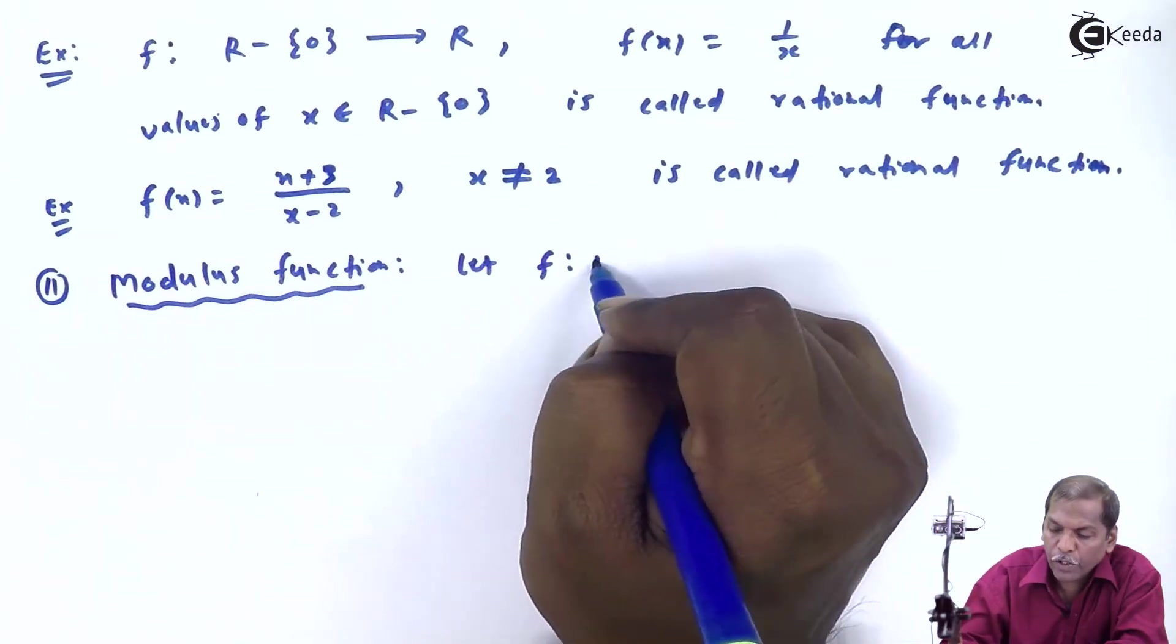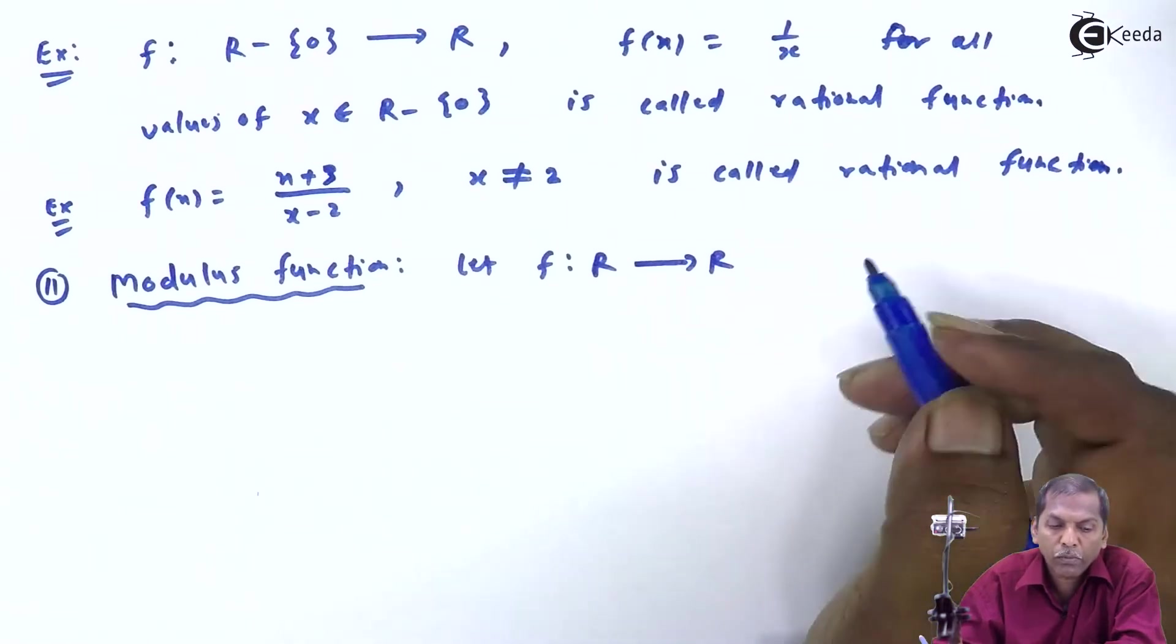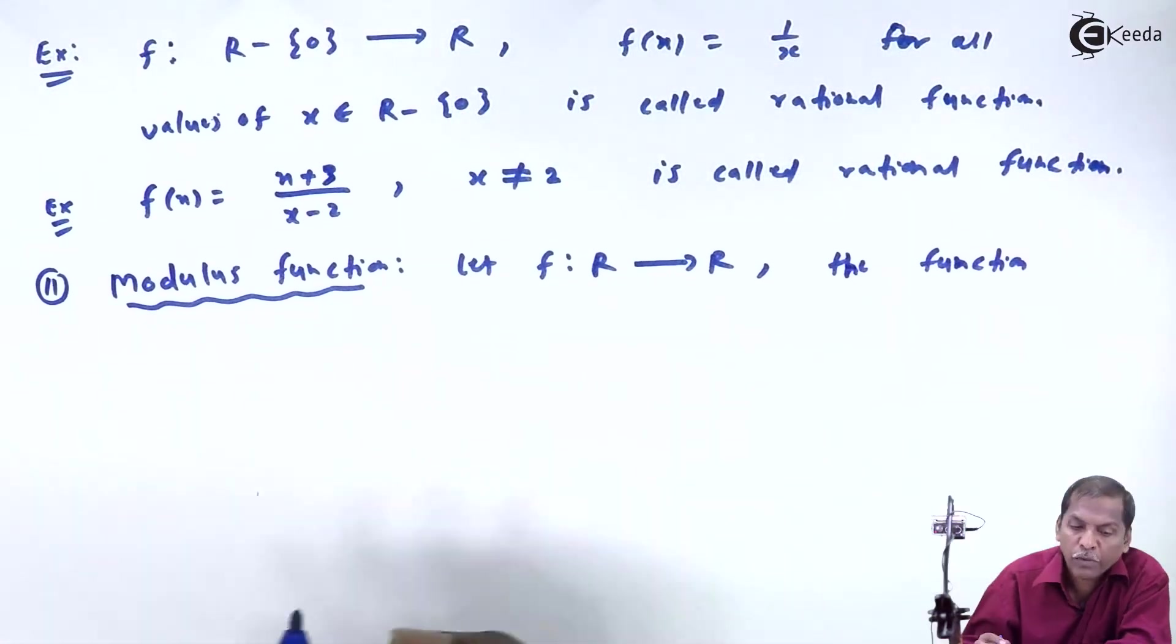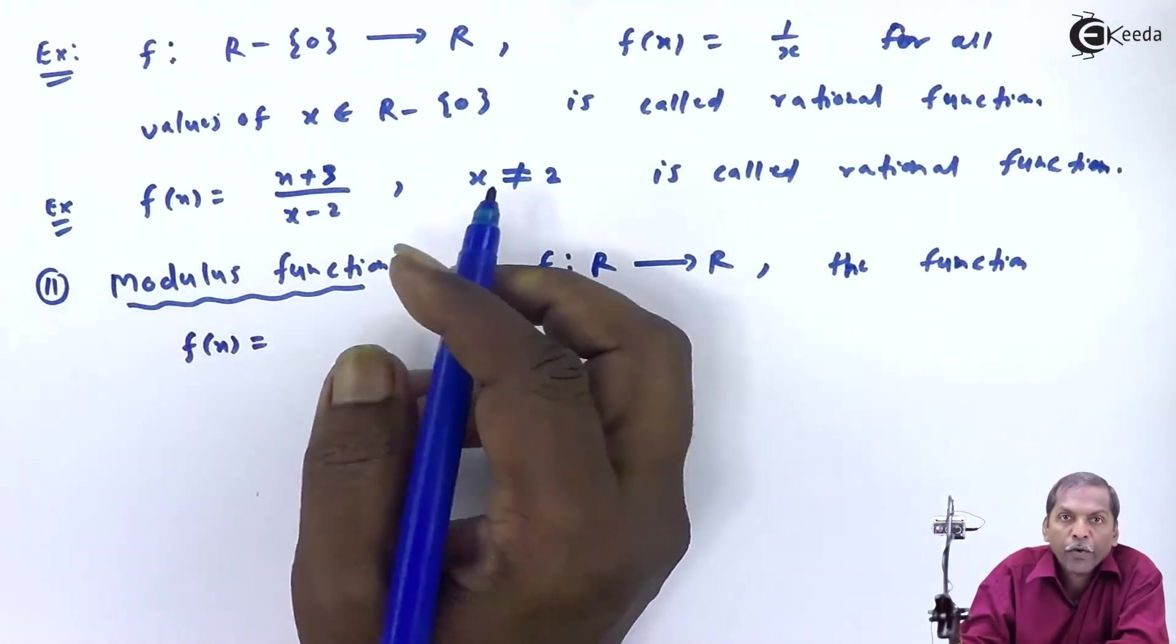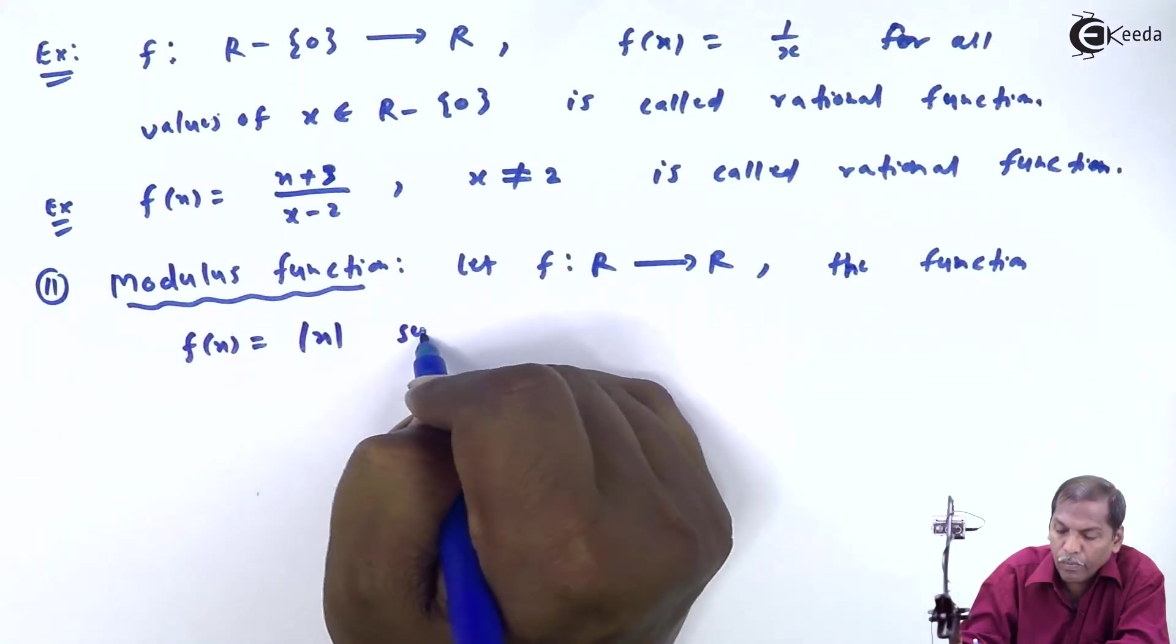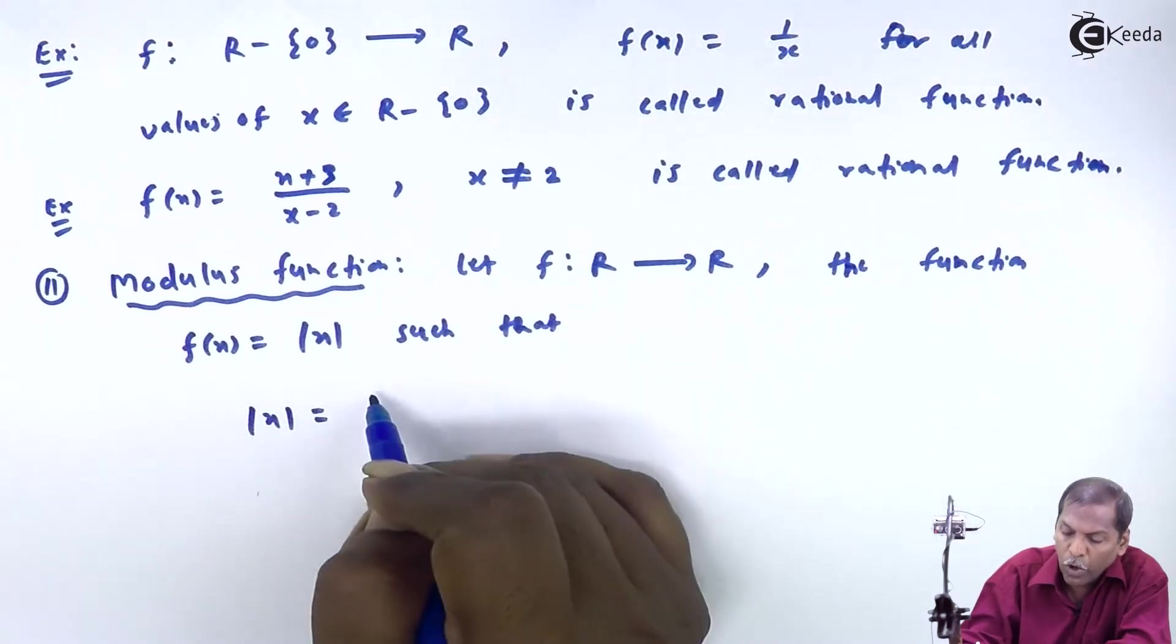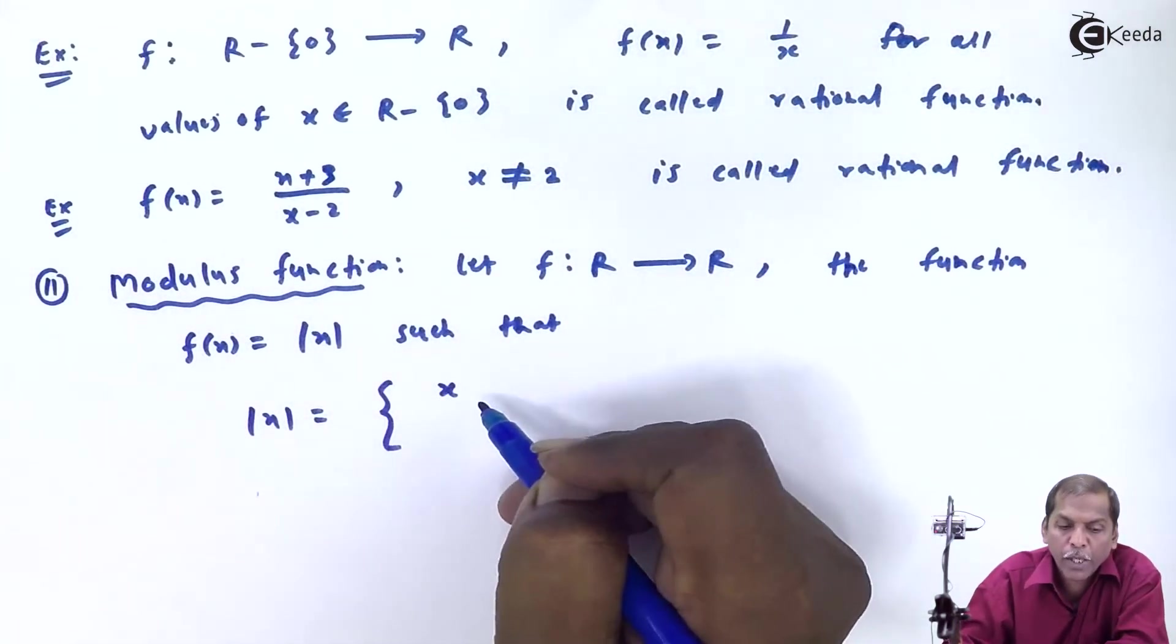Let f be a function from the set of real numbers to real numbers. Then the function f(x) is equal to modulus x, such that |x| is equal to plus x, positive.